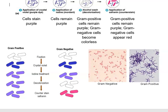Under a microscope, your Gram negative cells look red, as you see on the left, and the Gram positive cells look purple, as you see on the right.